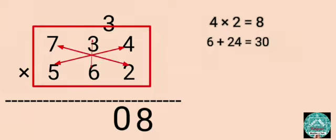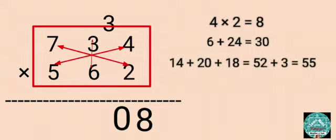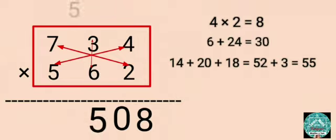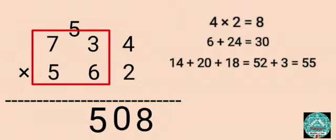Step 3: Multiply 7 by 2, 5 by 4, and 6 by 3, then add: 14 plus 20 plus 18 equals 52. Then add 52 and 3 that's carried forward: 52 plus 3 equals 55. Write 5 before 0 and carry forward 5.